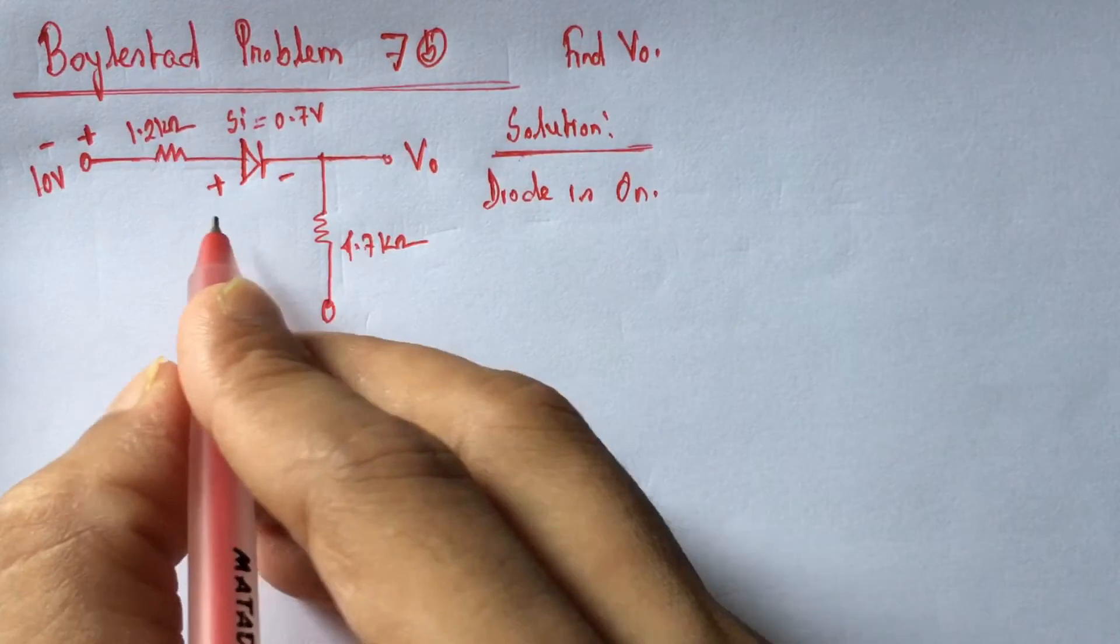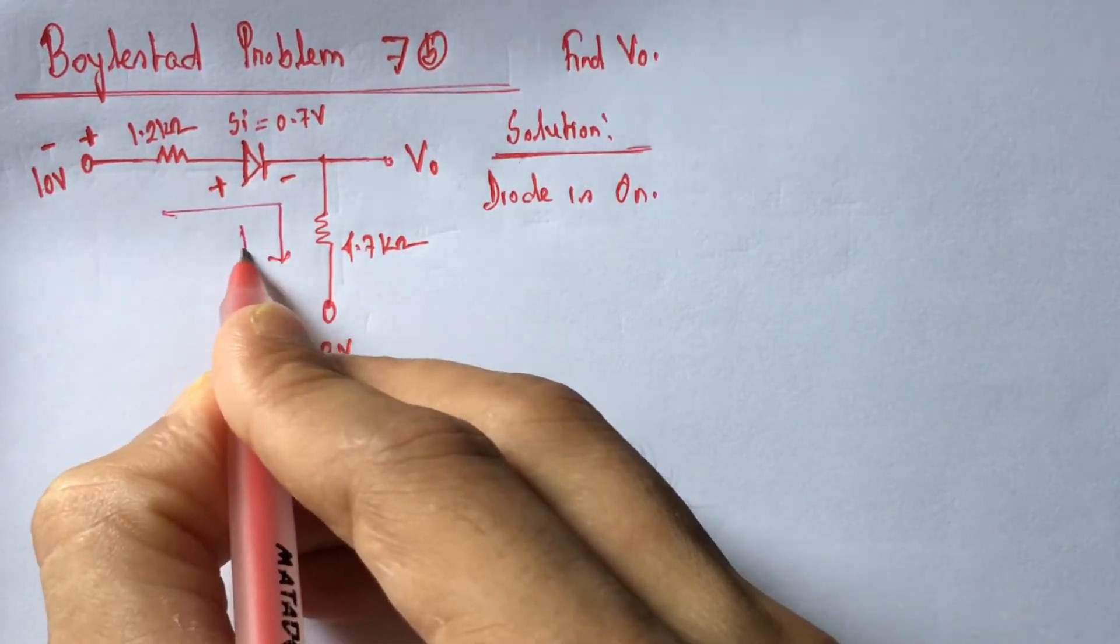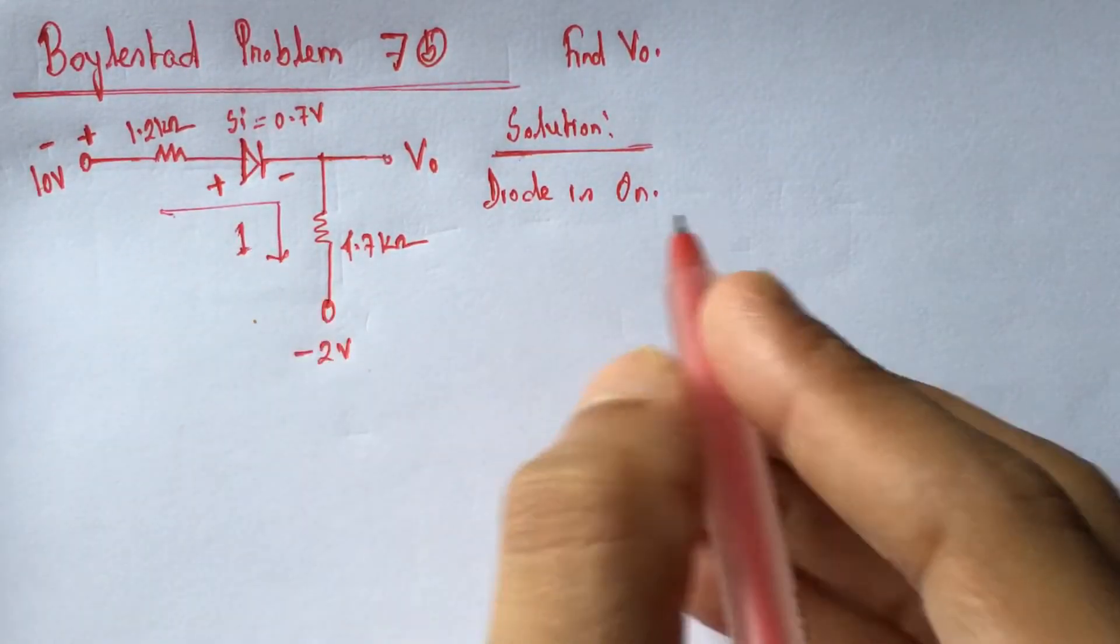Since the diode is on, let us assume that a current I is flowing throughout the circuit.